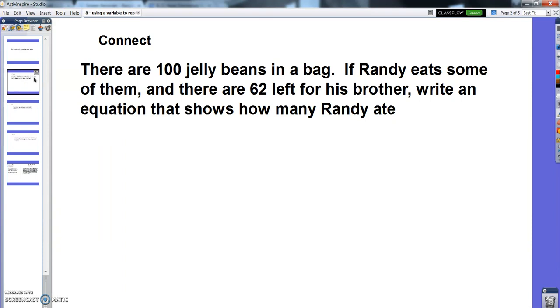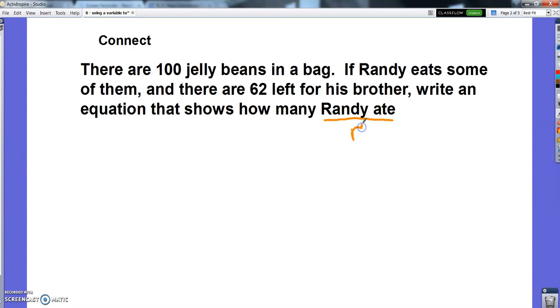Okay, so let's go back to the simple 6th grade kind of problem when we very first learned how to use variables. 100 jelly beans in a bag. If Randy eats some of them, there are 62 left for his brother. Write an equation that shows how many Randy ate. So here the unknown value is how many Randy ate. Maybe we'll make that be R. You don't even need a variable to solve this. You can say there's 100, 62 left. You know in your head 100 minus 62 is 38. So he ate 38 jelly beans.